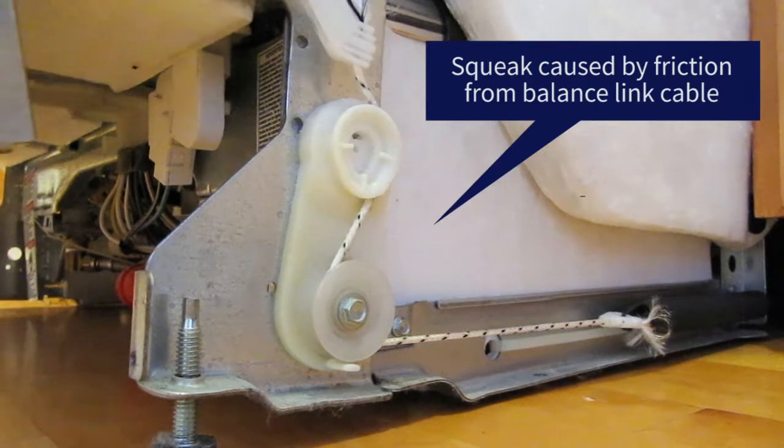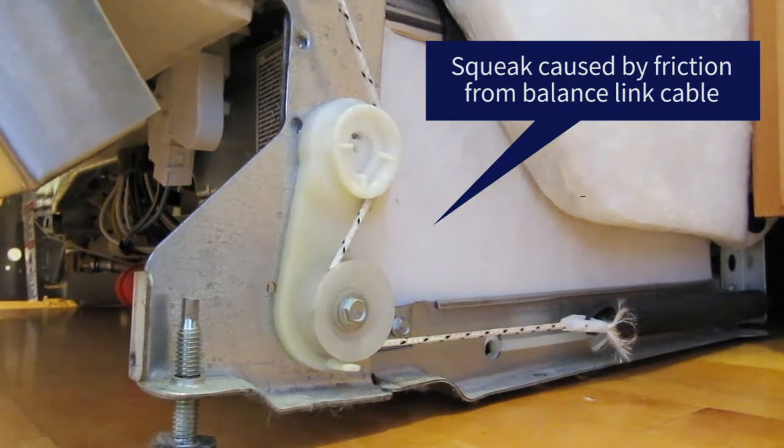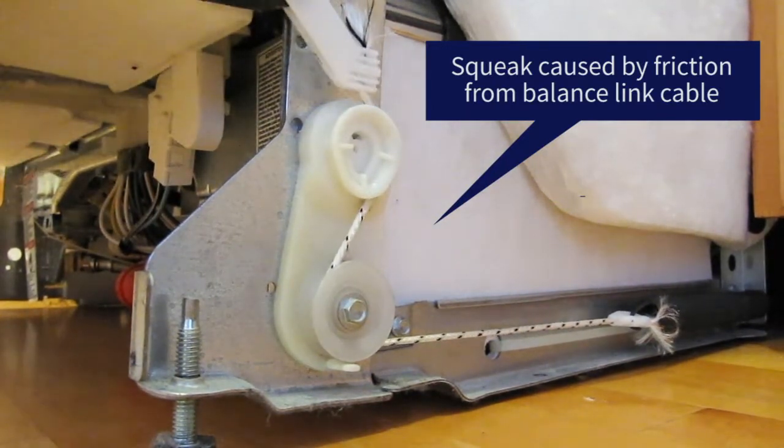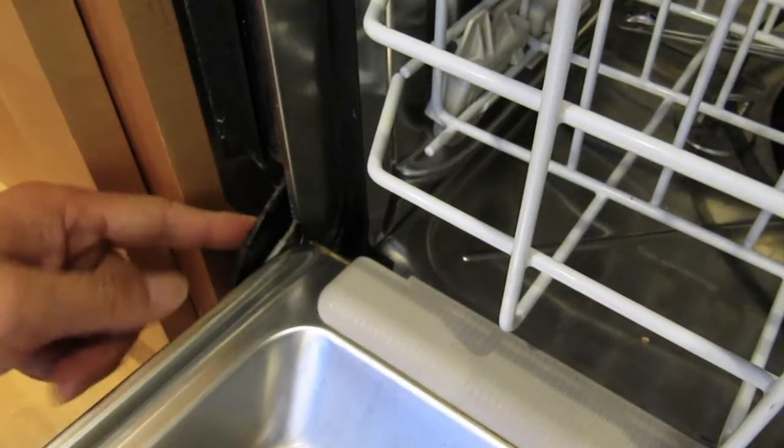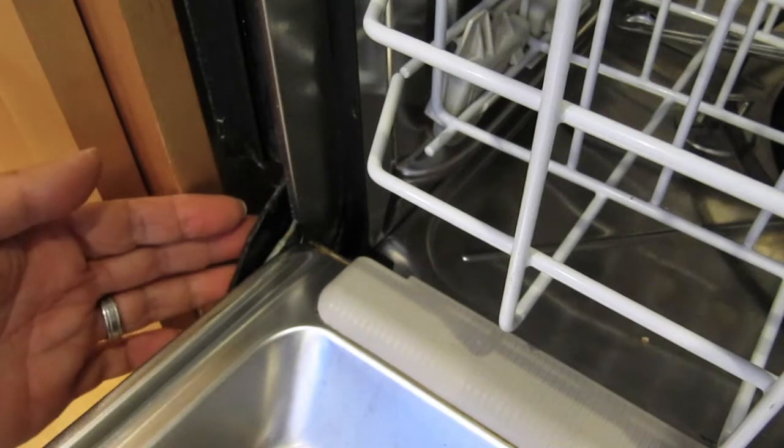The squeaking is actually coming from the tension of the balance link cable rubbing on these plastic pulleys at the bottom of the dishwasher. Originally I thought the noise was coming from the hinge, but that definitely wasn't the source of the squeak.